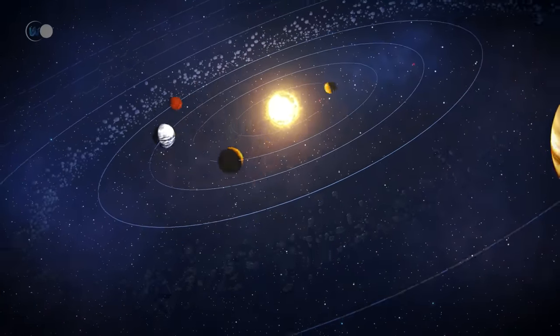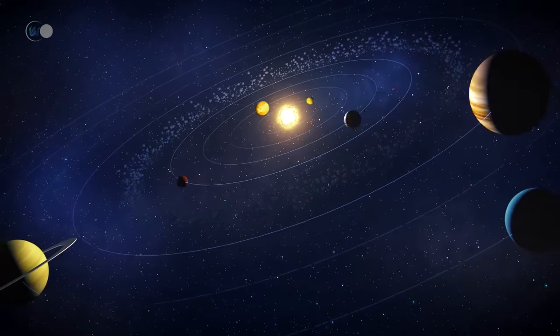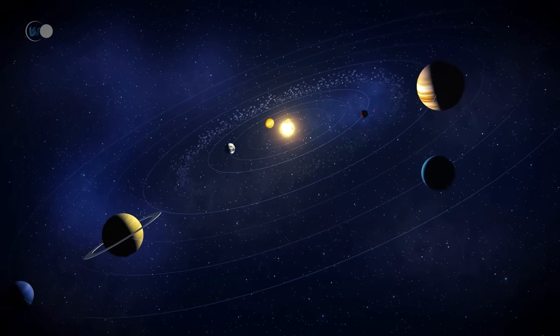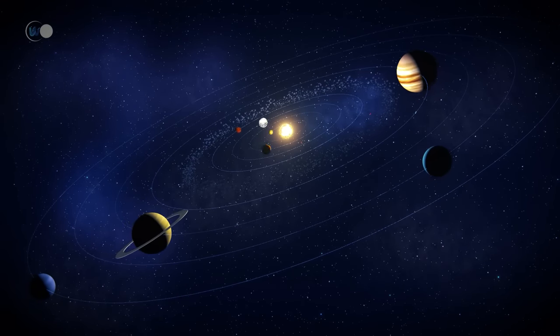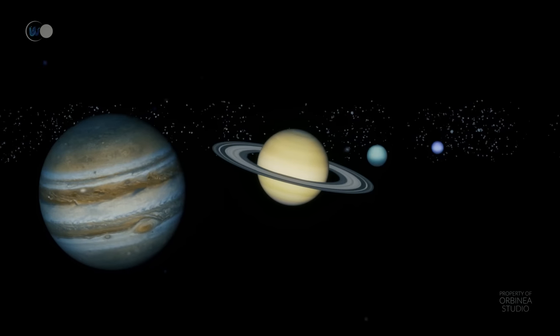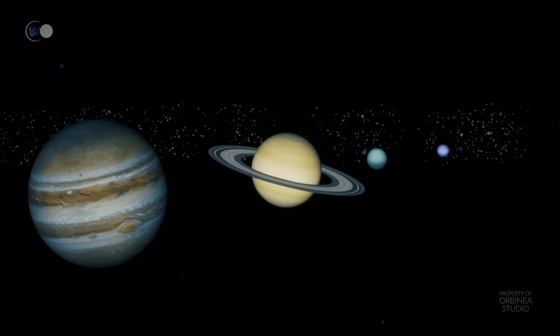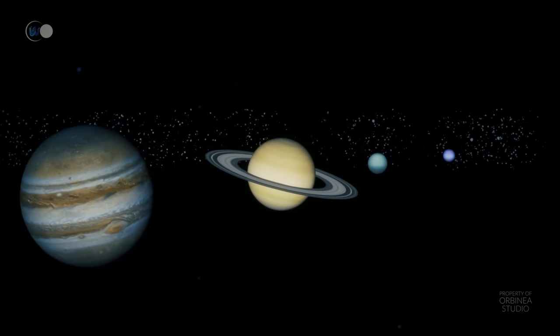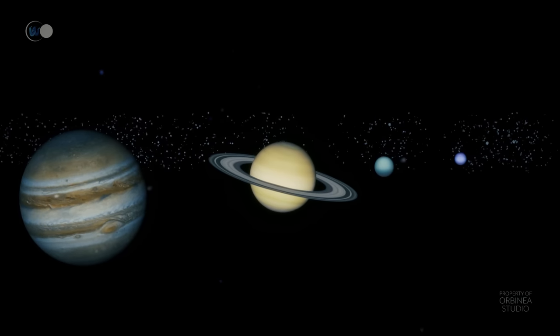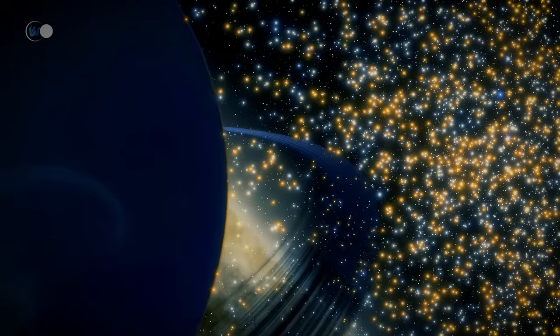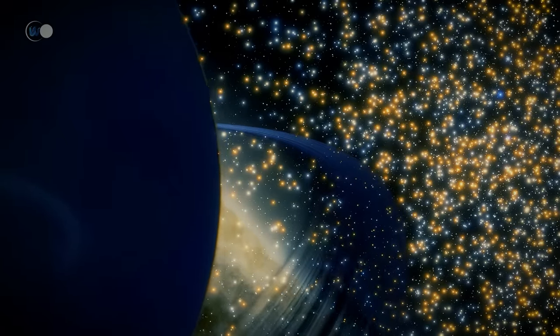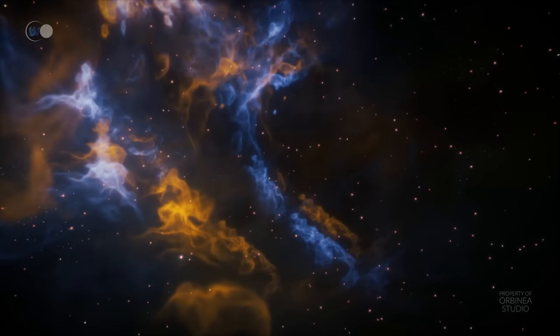From this asteroid belt, we enter the domain of the giant planets: Jupiter, Saturn, Uranus, and Neptune. In this external zone of the solar system, the lower temperature during formation allowed the existence of volatile elements. The planets are larger in size than the terrestrial planets and are composed of light elements such as hydrogen and helium.